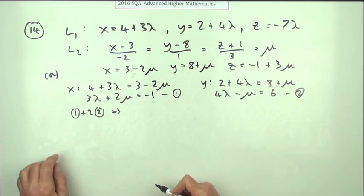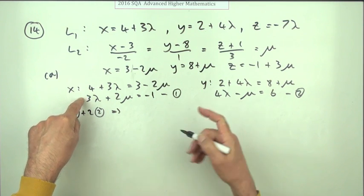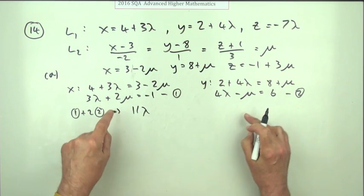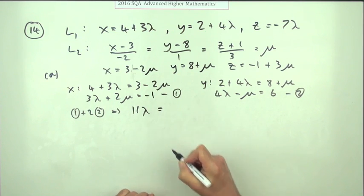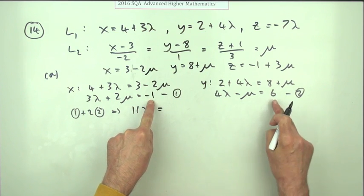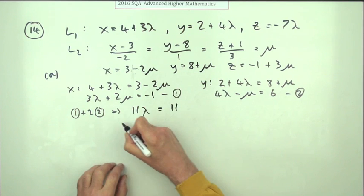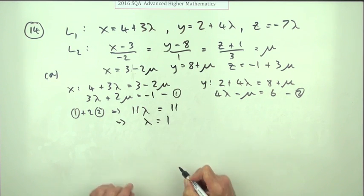Then it would have 3 plus 8 is 11 lots of lambda. They'll cancel out and that will come to negative 1 plus two lots of 6 is 11. Ah you breathe a sigh of relief because it comes to a very nice and agreeable 1.